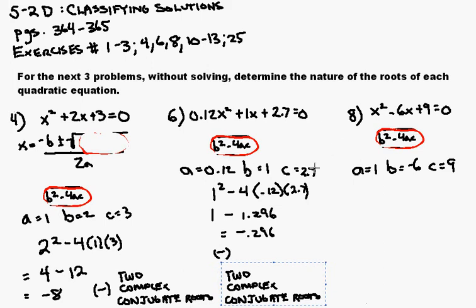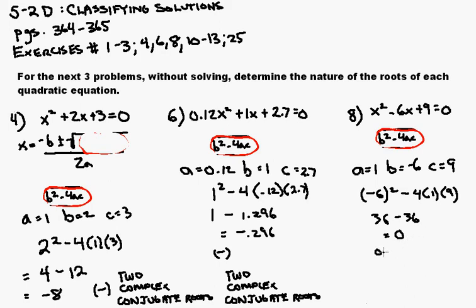For number 8, I have b squared minus 4ac. So b is negative 6 squared minus 4 times 1 times 9. I have positive 36 minus 36, which equals 0. When the discriminant is 0, we have one real double root.